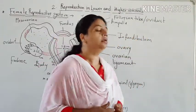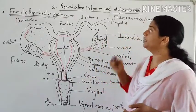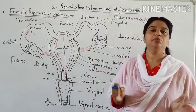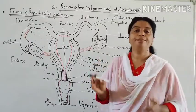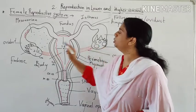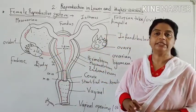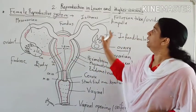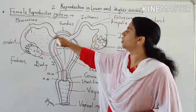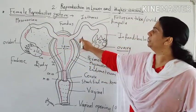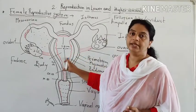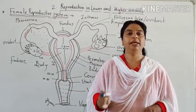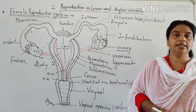Hello students. Here we will see the next bit of the second chapter: reproduction in lower and higher animals - the female reproductive system. The female reproductive system of a human being consists of a number of paired and unpaired parts. The paired structures are: two ovaries (the primary female sex organ), two oviducts, a single uterus or womb, and a single vagina. These are the four internal parts of the female reproductive system. The others are the external genitalia and accessory glands.